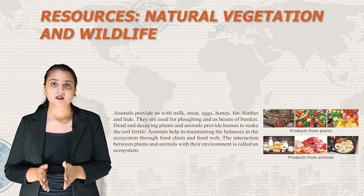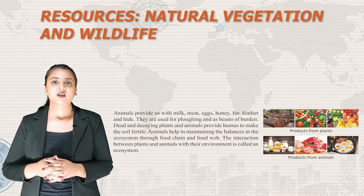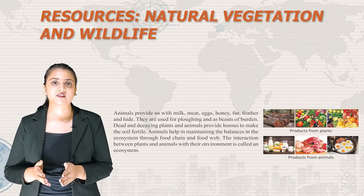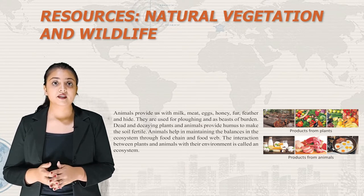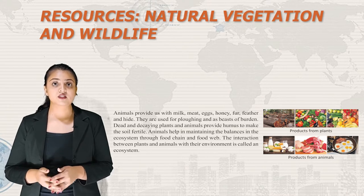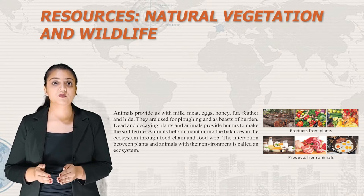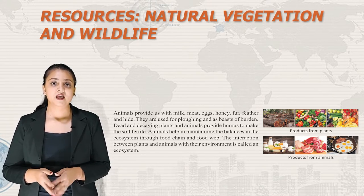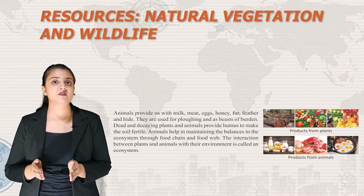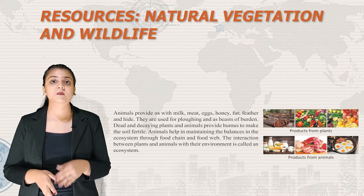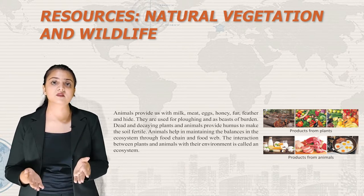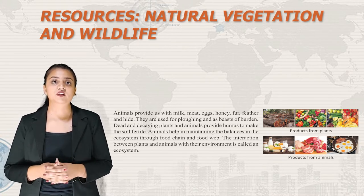Animals provide us with milk, meat, eggs, honey, fur, feather and hide. They are used for plowing and as beasts of burden. Dead and decayed plants and animals provide humus to make the soil fertile. Animals help in maintaining balance in the ecosystem through food chain and food web. The interaction between plants and animals with their environment is called an ecosystem.